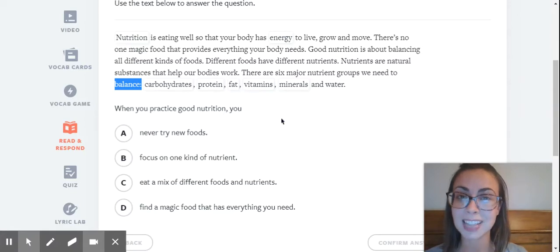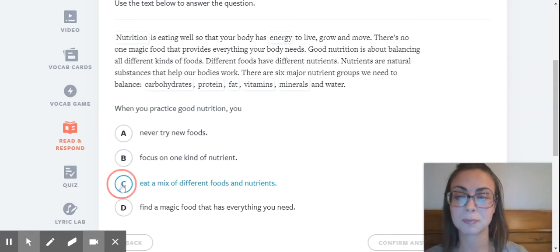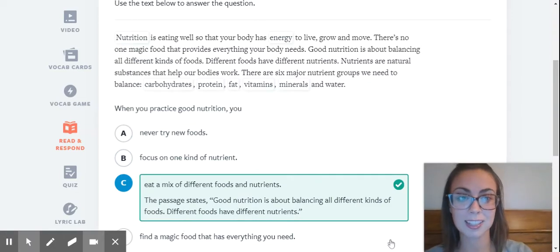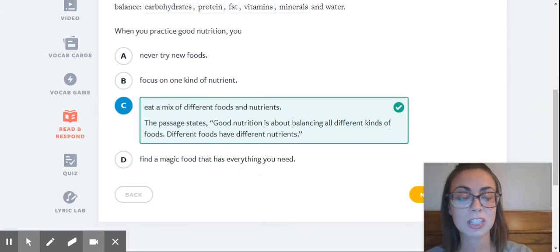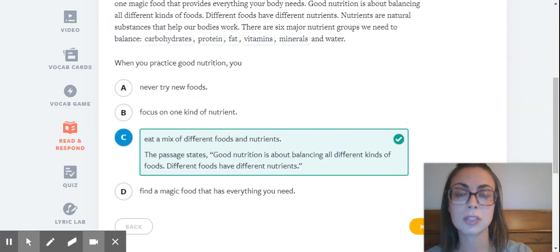You never try new foods. So good nutrition, we know, needs different foods. So different foods would mean you might have to try new ones. So we know it's not going to be A. They focus on one type of nutrient. We need a balance for good nutrition. So a balance would mean that you would need all of those nutrients. You would need the carbohydrates, the proteins, the fats, the vitamins, and the minerals. You eat a mix of different foods and nutrients. We have right there different foods and nutrients. So that's definitely a possibility. Let's just make sure we don't overlook anything. Find a magic food that has everything you need. That would be great. We could practice good nutrition with a magic food. But our best answer choice would be which one? C. Yeah. So good job guys.